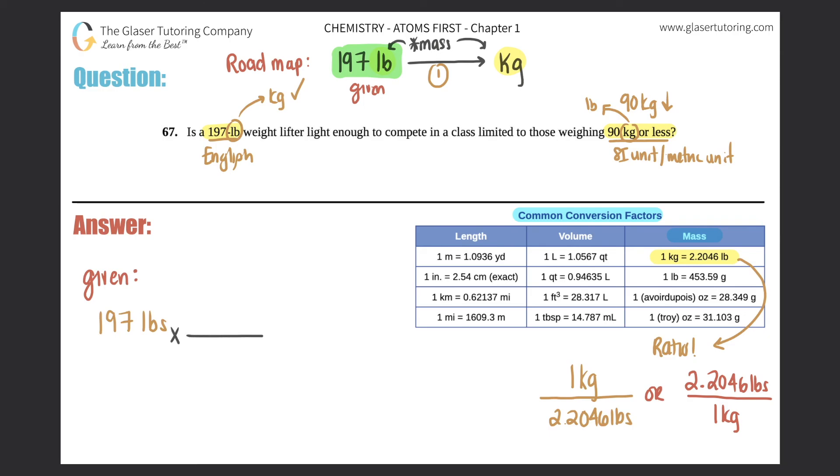And I don't want pounds anymore. So I have to put that on the opposite side. Remember, if you want to cancel anything out, it always has to be on the opposite side. It can never be on the same side. This would not cancel out. So it has to be on the opposite side. And what you want to put will be on the top in this case. So kilograms.